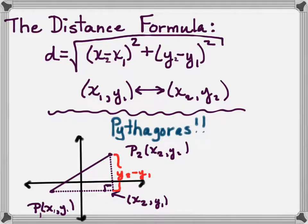Okay? So now the distance between P2 and our corner point here is going to be y2 minus y1. When you're finding distance, remember it's a difference between two things. And along this side it's going to be x2 minus x1.